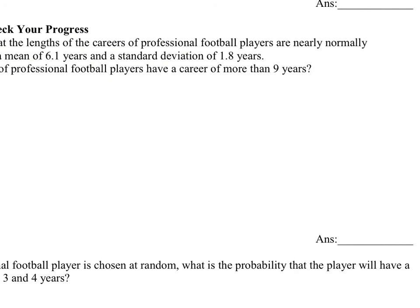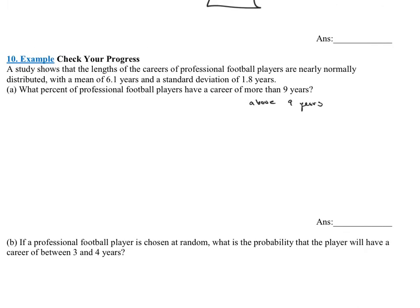Okay. So again, this does not say use the empirical rule. This is not nice values, but let's figure this out. So more than nine years. They're saying above nine years. The first thing that we're going to do is find out that Z-score of nine years. To find out the Z-scores, we do the data, which is nine, minus the mean. Read the problem. The mean is 6.1 years divided by the standard deviation, which is 1.8 years. Do that in your calculator now. So I'm doing nine minus 6.1 divided by 1.8. I'm getting a Z-score of 1.61.